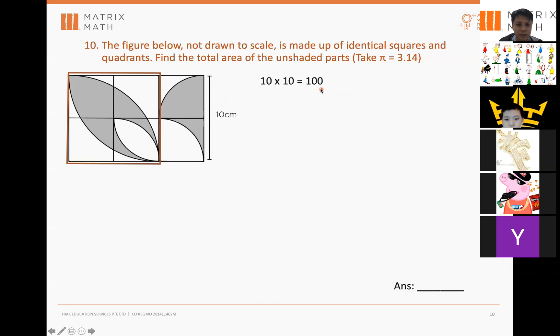So, area of a square is 10 times 10, 100. Because the side is 10, right? Now, this is the quadrant that you need to subtract away from the square. So, you use the 100, take away the quadrant. You get the boomerang, which is A.